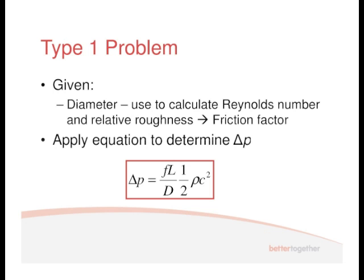For Type 1 problems, you're given the diameter. The first thing to do is work out your Reynolds number and your relative roughness, and that will give you your friction factor from the Moody chart. You then use the standard equation — you now know F, L, D, and ρC². Sometimes you'll have to convert V̇ to C using V̇ = A × C. And from that you'll work out the pressure drop. That's all very simple.